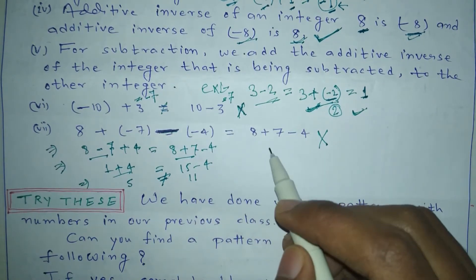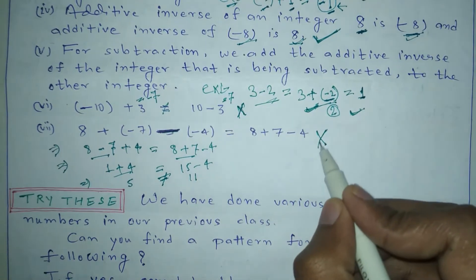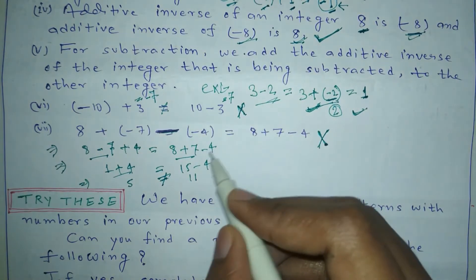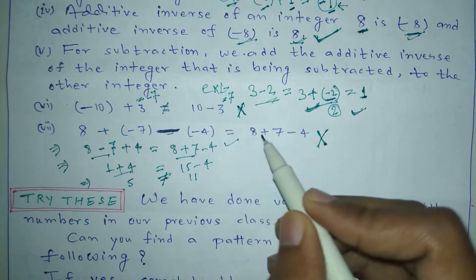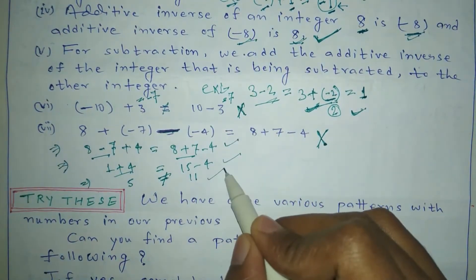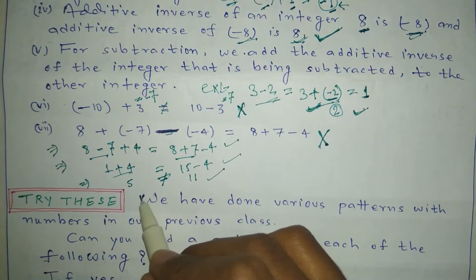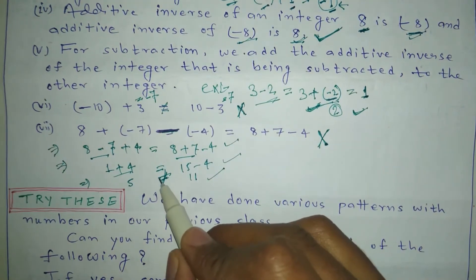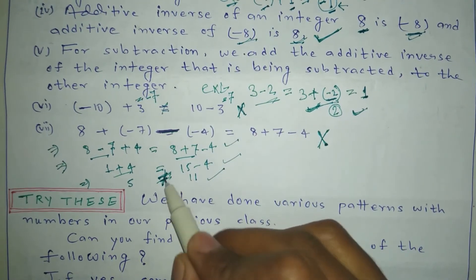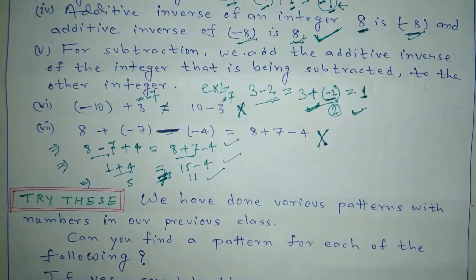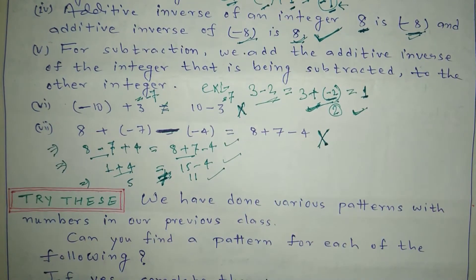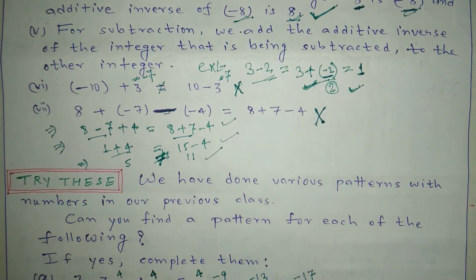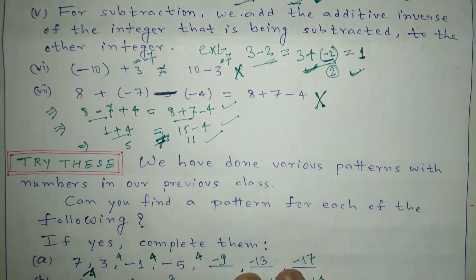The next point states: 8 plus (minus 7) minus (minus 4) equals 8 plus 7 minus 4. This point is also wrong. When we solve the left side step by step, we get 5, but the right side gives 11. Since 5 does not equal 11, this statement is incorrect.